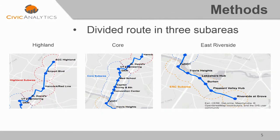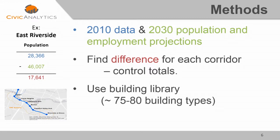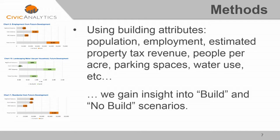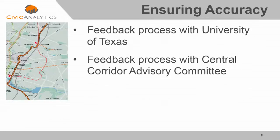To start, we subdivided our route into three sub-areas: north, central, and south. We used population and employment data as our guide — 2010 census data, 2030 projection data — and we took the difference of that, which we called our control total, and then we used buildings from our building library to try and match that control total. In addition to each building having an attribute for people or jobs, they also had attributes for things like estimated property tax revenue, water use, parking spaces, and impervious cover. So depending on the mix of buildings we used, we got a unique insight into the difference between a build and a no-build scenario.